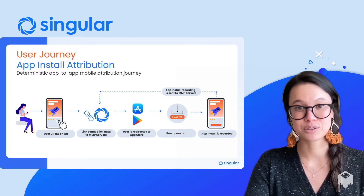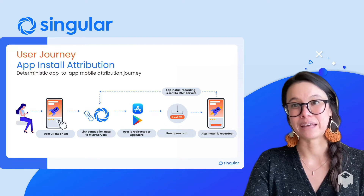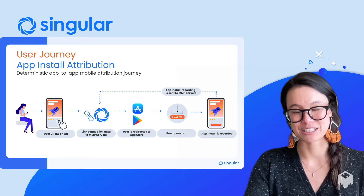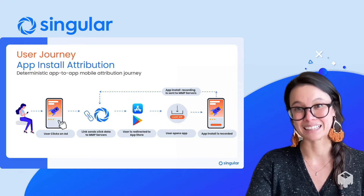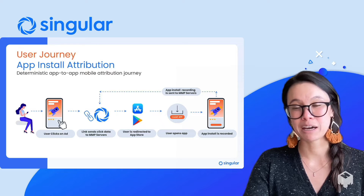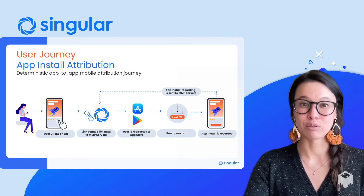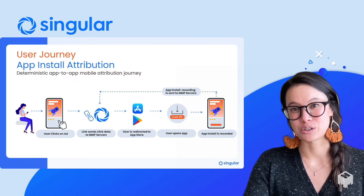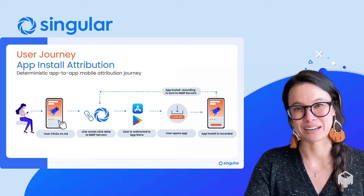Next, the user downloads and opens the app. Again, in the background, when the app is installed and opened, the MMP is sent the install information, which is then matched to the touchpoint or the click from that original marketing ad. Once the match is made, the MMP can determine the attribution decision and relays credit through a partner postback. This is then sent to the relevant ad network or source that hosted the marketing campaign.